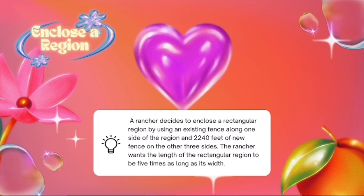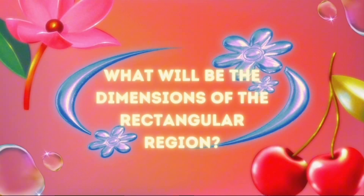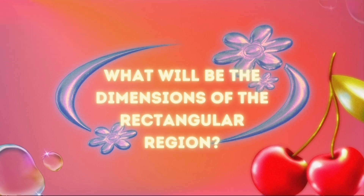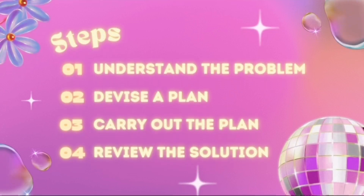The rancher wants the length of the rectangular region to be five times as long as its width. The question is: what will be the dimensions of the rectangular region? Since we will be using Polya's problem-solving strategy, there are a total of four steps we need to follow in order to get the answer.